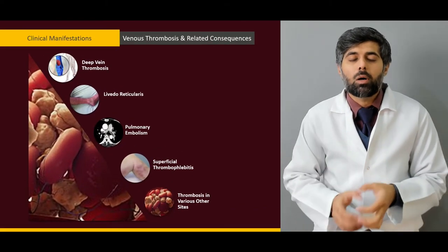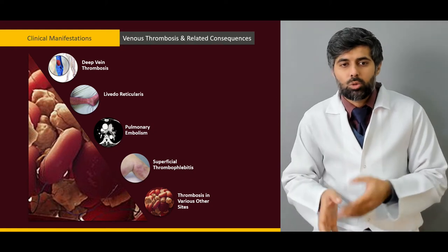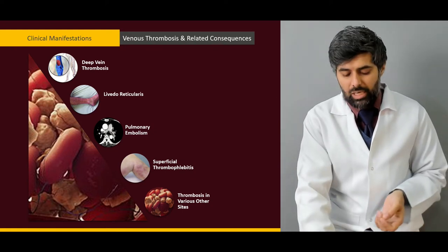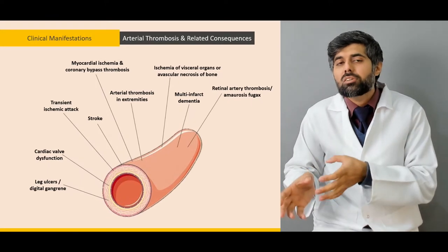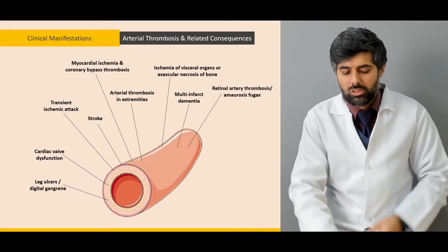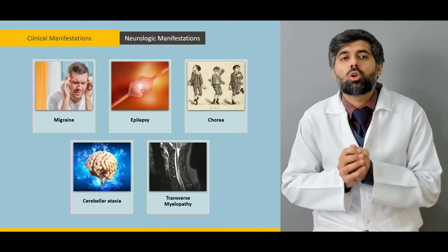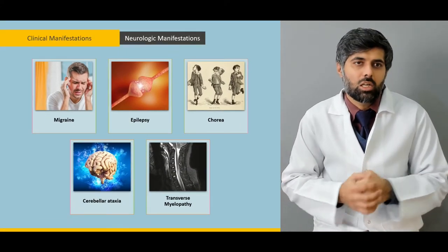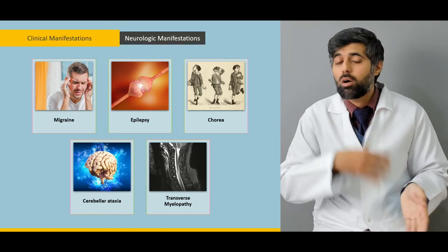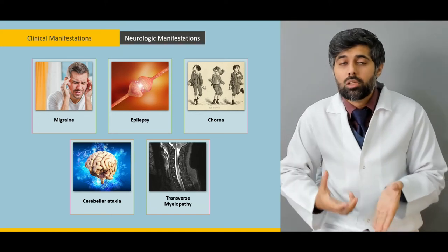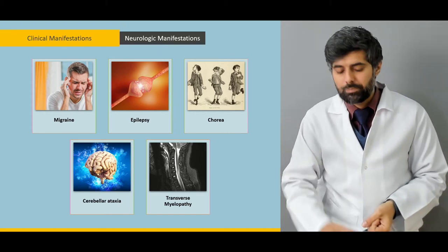Then we learn about its clinical manifestations, both venous thrombosis and arterial thrombosis and their related consequences. Then we learn about the neurological manifestations — what they are, why they occur, how they occur, and why they are important for us to examine.